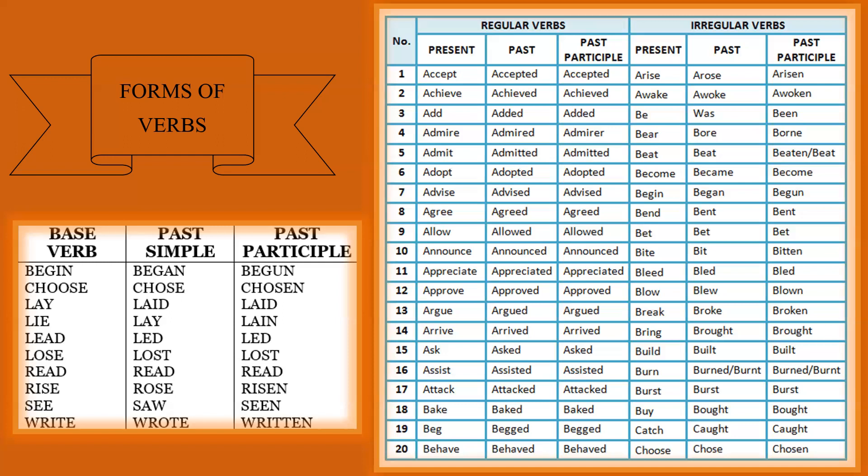The past tense form of a verb is used to talk about actions that have already happened in the past. Regular verbs form their past tense by adding -ed to the base form, like walked, jumped, or played. But remember, some verbs have irregular past tense forms, like went, ate, ran. The past participle form of a verb is used in perfect tenses or passive voice constructions. Regular verbs form their past participle by adding -ed to the base form. For example, written, broken, or seen.